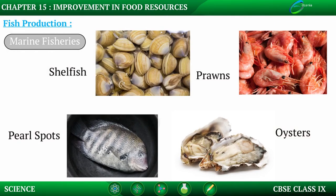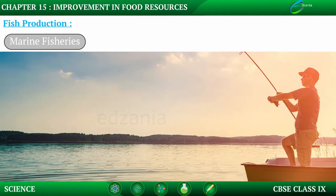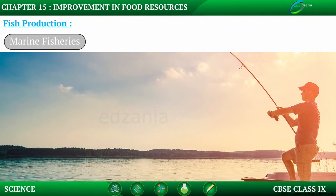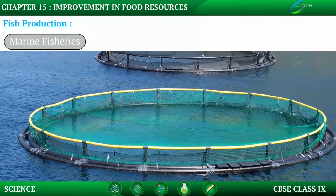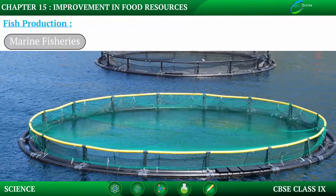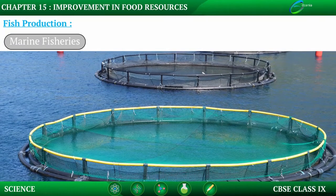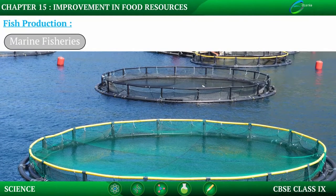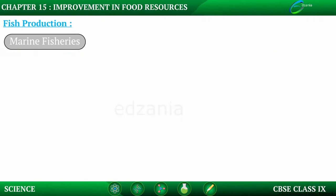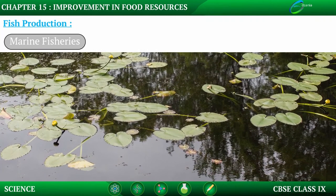Oyster is cultivated as they make pearls. Marine fish stock gets depleted due to water pollution, so the demand for more fish is fulfilled by culture fishery, that is mariculture. Mariculture is a specialized branch involved in the cultivation of marine organisms for food and other products in open ocean, enclosed sections of ocean, or in tanks and ponds filled with seawater.